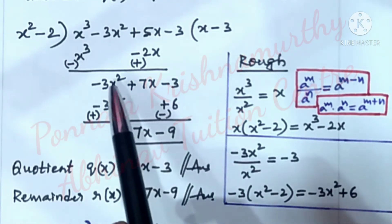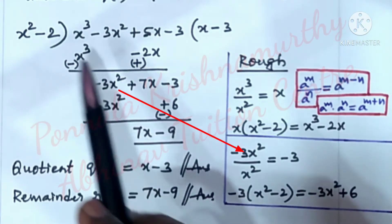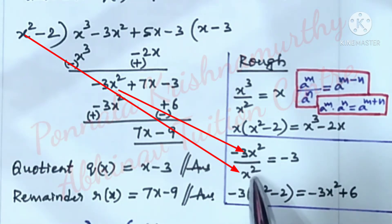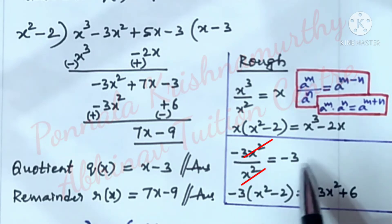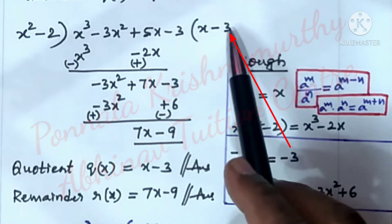Now, this -3x² by this x² again here. Now, x² and x² are cancelled. Minus 3 remains. This -3 is written here.